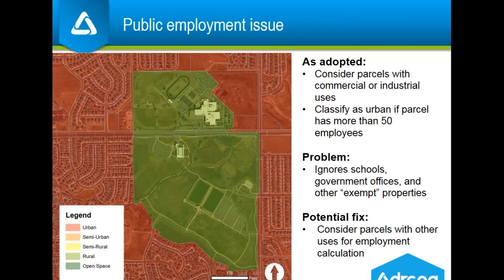When looking at non-residential properties, there's a first step to check whether the parcel is in a commercial or industrial subdivision. After that, there's a check for more isolated parcels with significant employment, which looks at commercial and industrial uses only. However, the assessor's data we use considers many properties as exempt even if they have significant employment — in this case, it is a school — so these are skipped over through this process and not categorized as urban currently in the model.